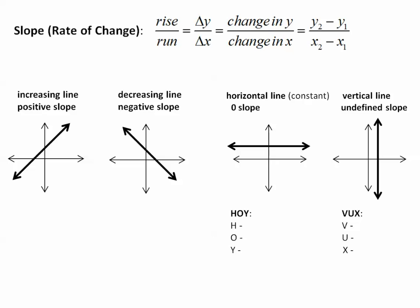Let's begin by recalling what slope means. Another word for slope is rate of change. Slope is the change in y divided by the change in x, also known as rise over run. Rise means up or down, and run means right or left. Delta y and delta x represent change in y and change in x, and this is the formula that helps us find the slope.